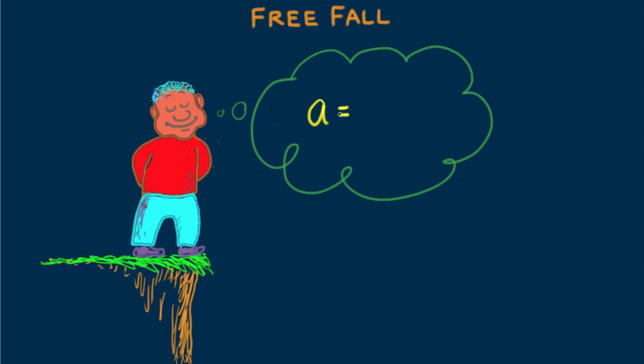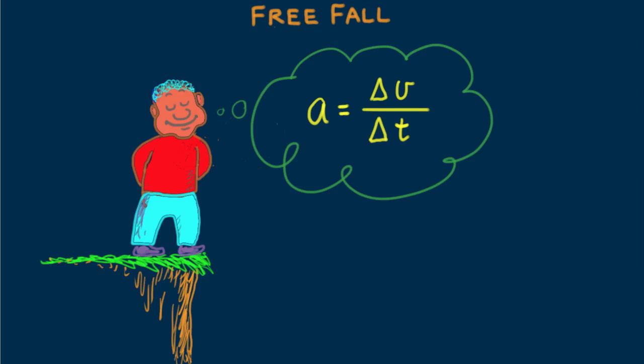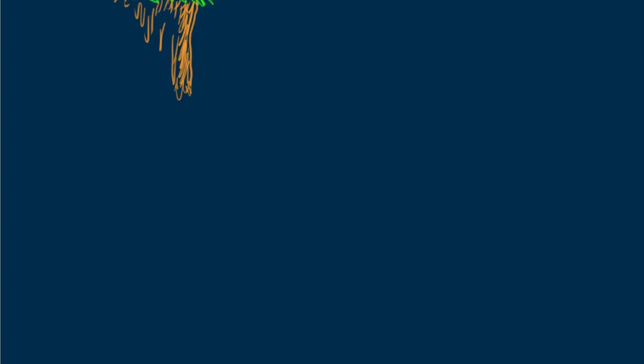The falling boulder picks up speed as it falls. This pickup is acceleration. Acceleration equals the time rate of change of velocity given by the equation a is delta v per delta t. For straight line motion, we can use the terms velocity or speed interchangeably. Recall that speed is the magnitude of velocity.